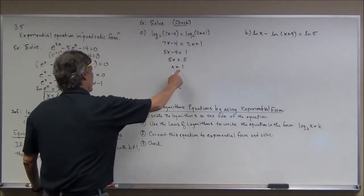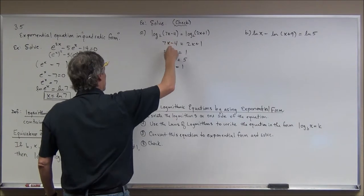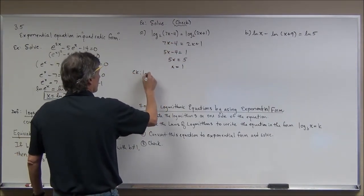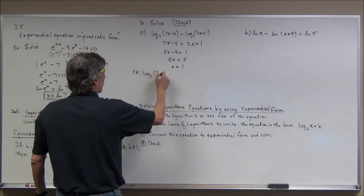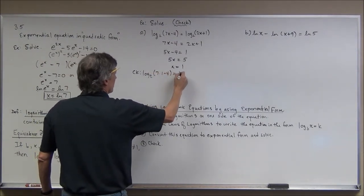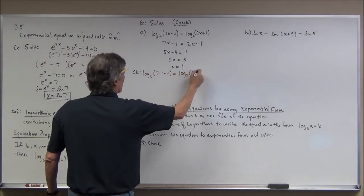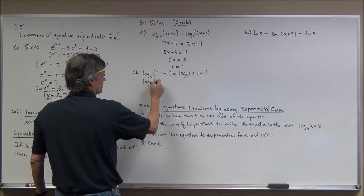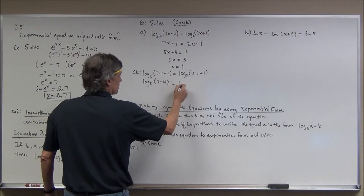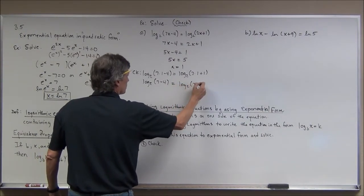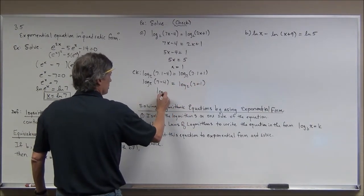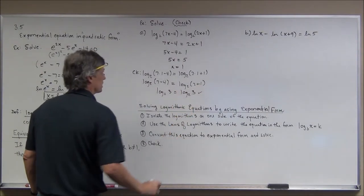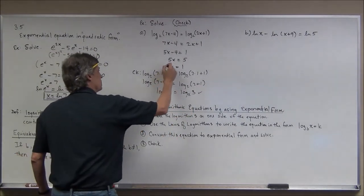Because if you take 1 and plug 1 back in and it makes this expression negative, that's no good. So my check would be the log base 2 of 7 times 1 minus 4, does that equal the log base 2 of 2 times 1 plus 1? So this is the log base 2 of 7 minus 4. This is the log base 2 of 2 plus 1. This is the log base 2 of 3 is equal to the log base 2 of 3. This checks out just fine, and this is a good answer.